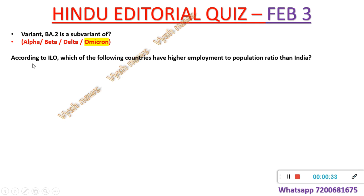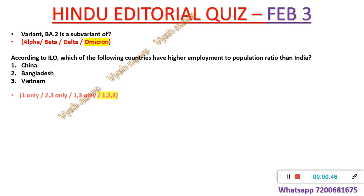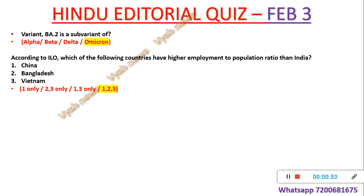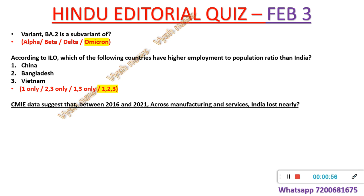According to the ILO (International Labour Organization), which of the following countries have a higher employment-to-population ratio than India — China, Bangladesh, or Vietnam? All three of these, in percentage terms, have a higher employment-to-population ratio compared to India. This is also discussed in detail — please watch it.